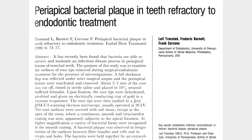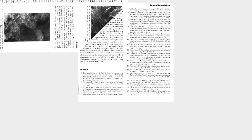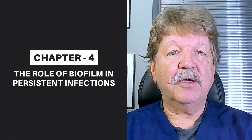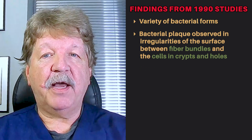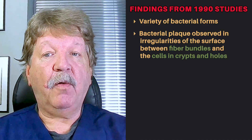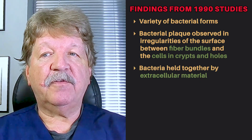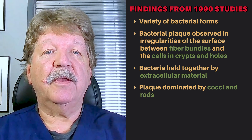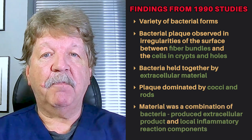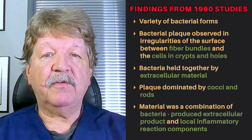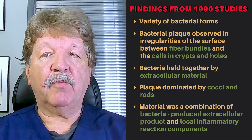Subsequently, more studies were performed in 1990 by the same two lead authors. This time, the root tips were found to be covered with a continuous, smooth coating adjacent to the apical foramen. The examination of this later showed a variety of bacterial forms. Bacterial plaque was observed in the irregularities of the surface between the fiber bundles and the cells in the crypts and holes. The bacteria were held together by an extracellular material and the plaque was dominated by cocci and rods. One of the conclusions was that this structureless material, both apically and marginally, was a combination of a bacteria-produced extracellular product as well as components reflecting the local inflammatory reaction.